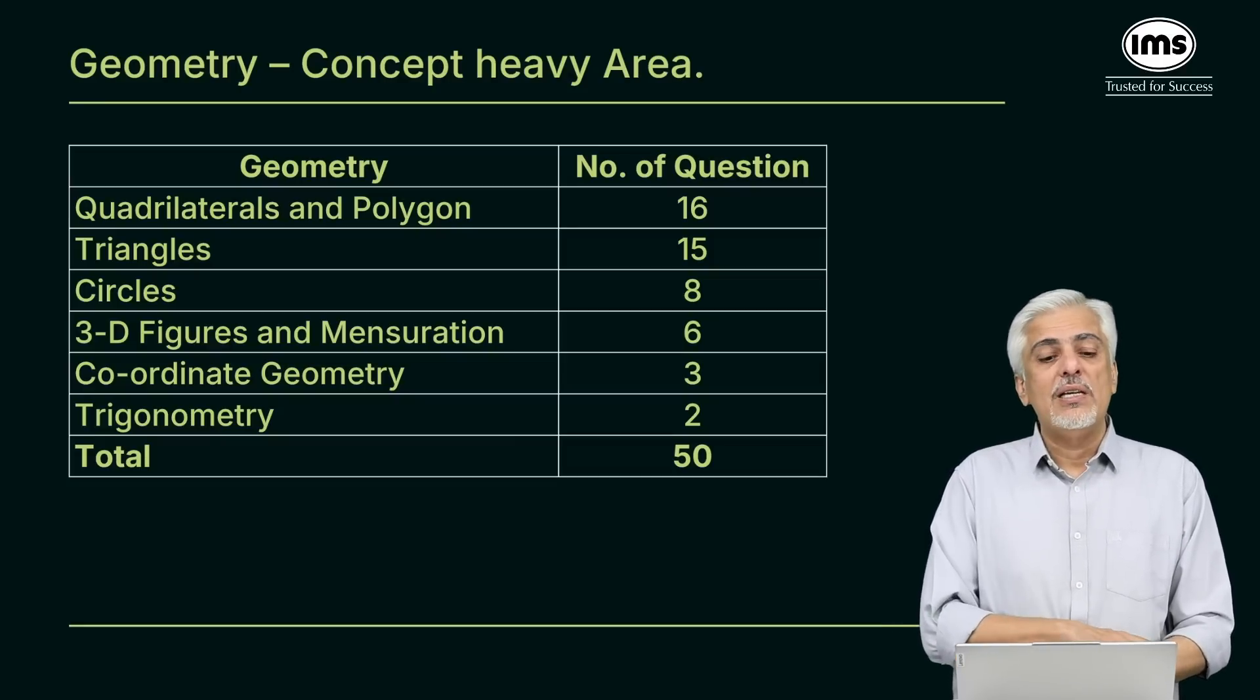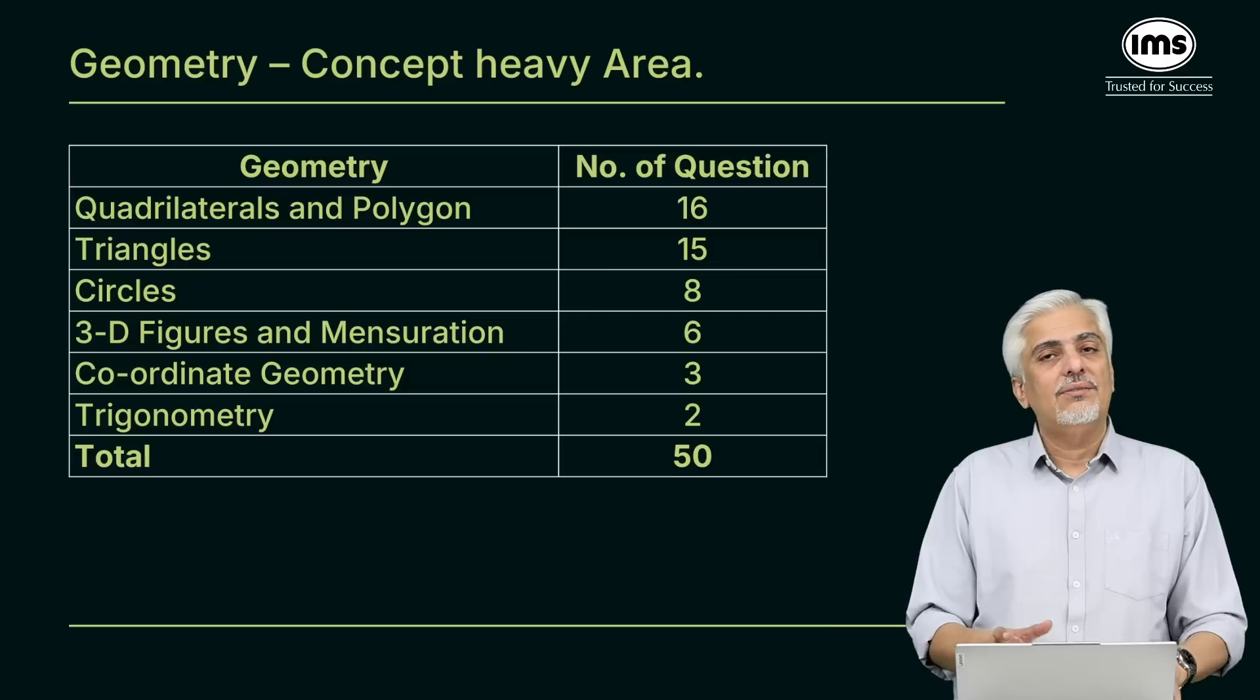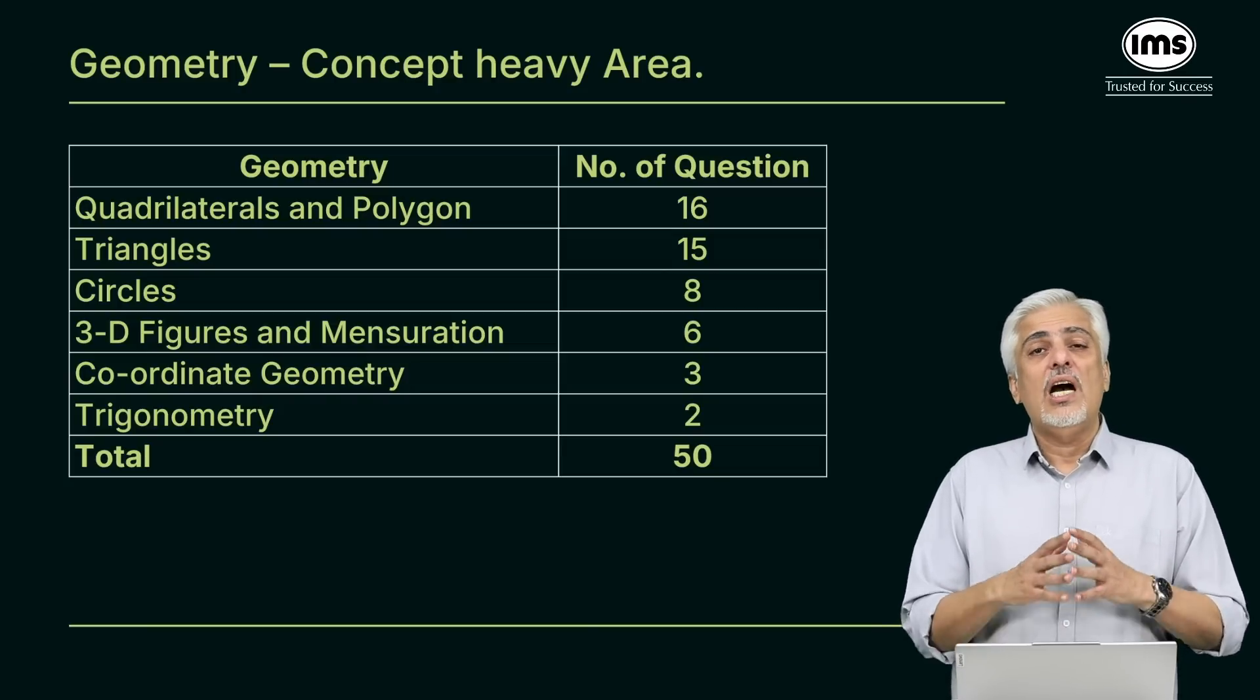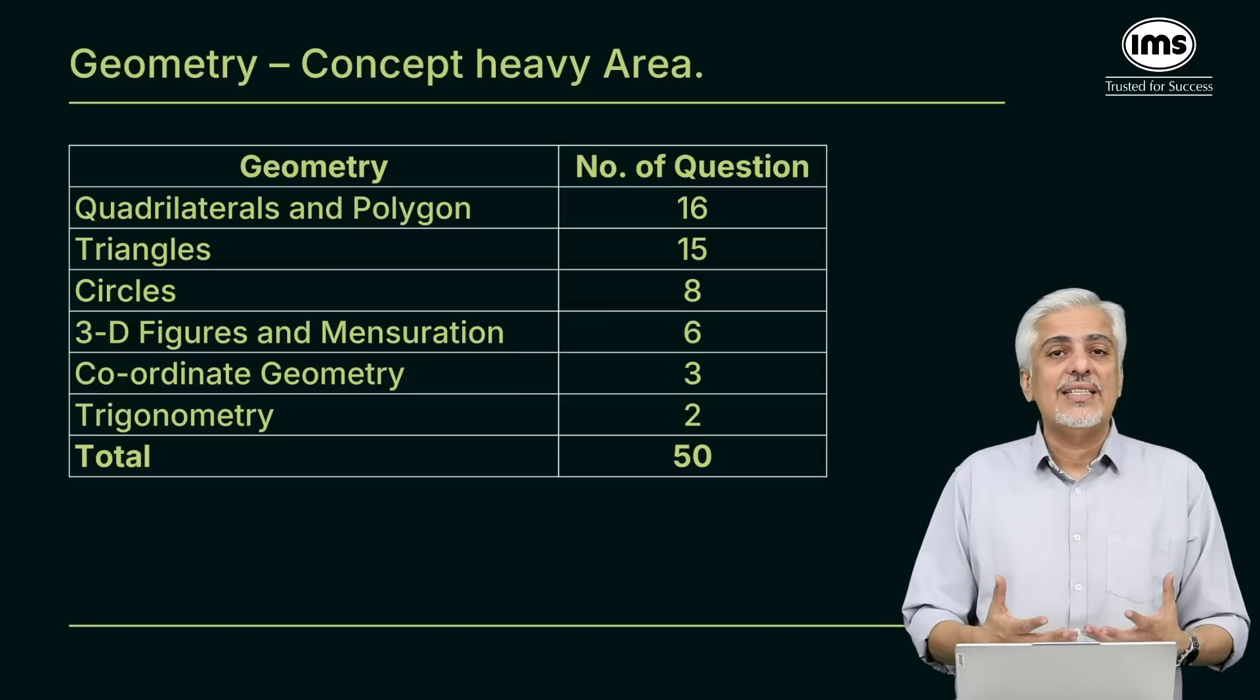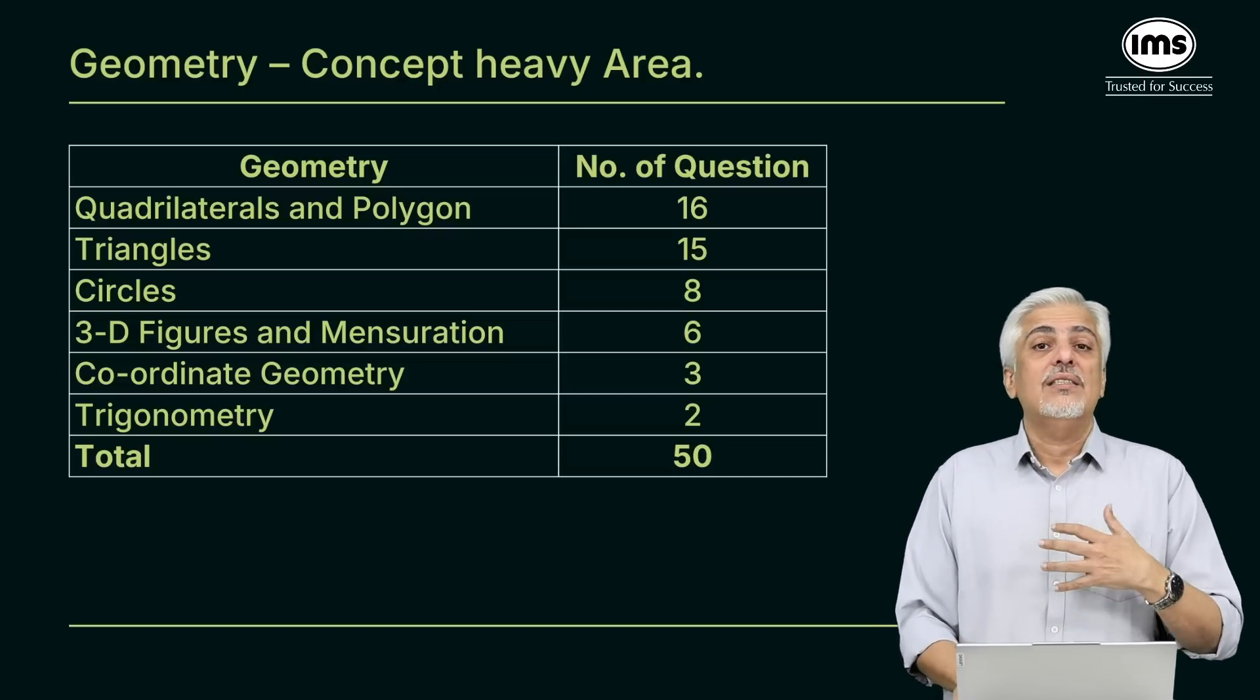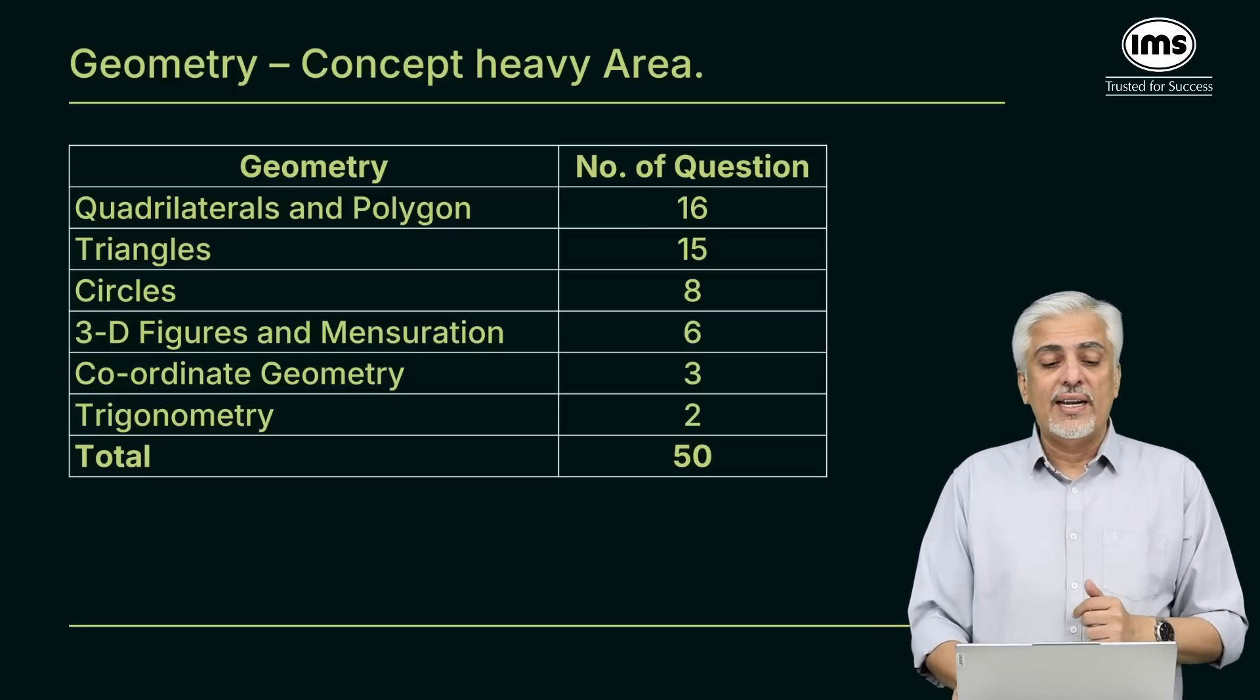Yes, coordinate geometry can be a pain for some of the students. Otherwise, mensuration is a pretty formula based area. Circles has a lot of properties. Trigonometry is something for non-engineers, I would say it's okay if you skip it because there are only two questions. Why rack your brain behind two questions out of 345 questions, which means the chances of being asked at CAT are very rare. So geometry, I would say that would be my third important area after algebra. Yes, somebody like me who loves geometry more than algebra can always say I will do geometry as my second area and algebra as my third area. That is also not a bad idea.